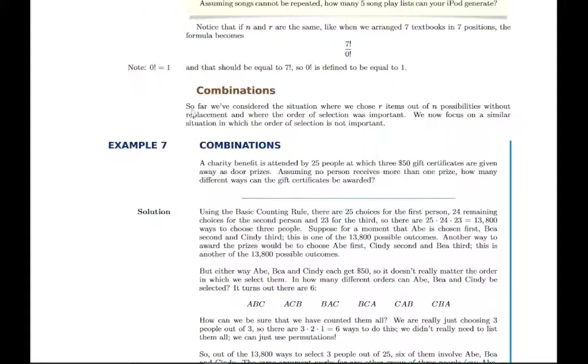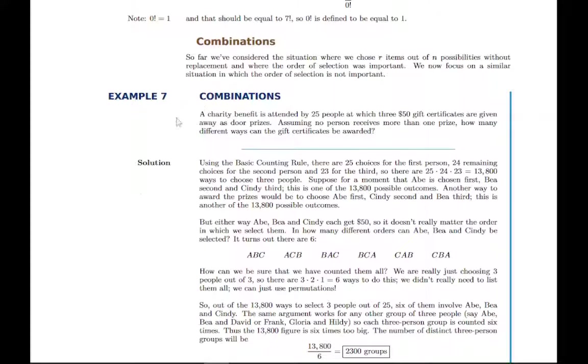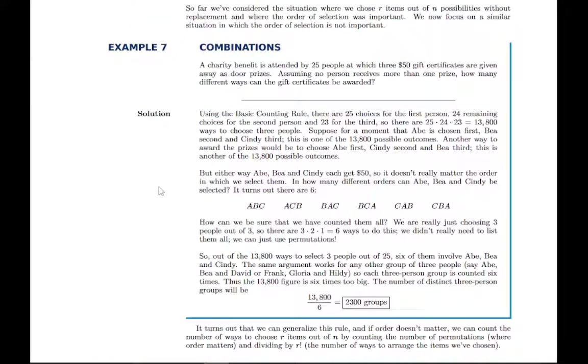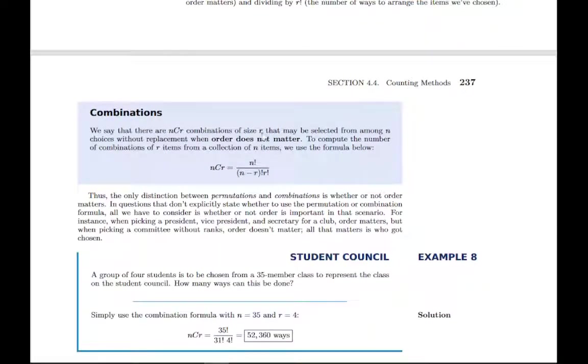Combinations are very similar. The only distinction is that the order that you arrange them in is not important anymore. So if you're still selecting from some group, but you're not arranging them in order, that's a combinations problem. So there's one example where it works it out kind of the long way and thinks through all the possibilities. And then from that example, we work out a rule that adjusts the permutation formula into a combinations formula.